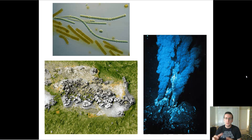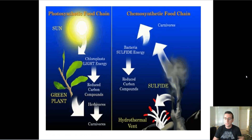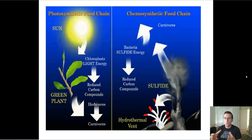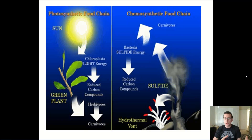You don't really need to know much about this. You just need to know that it exists — that photosynthesis is not the only way to create energy in food chains. There are two types on Earth. While the majority of the energy in Earth's food webs comes from the sun through photosynthesis, there's also chemosynthesis, which uses different kinds of processes.